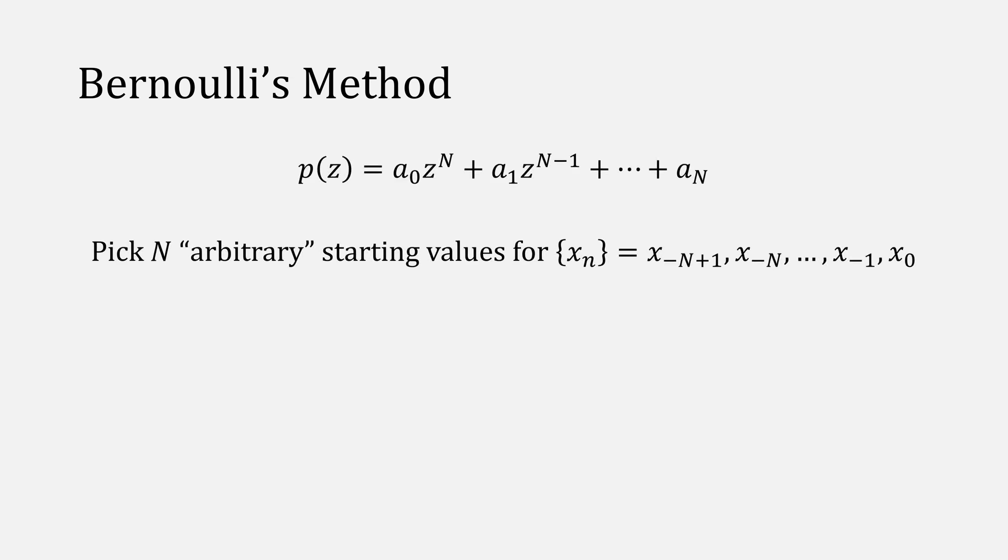Bernoulli's method is as straightforward as it gets. Given a polynomial, you pick n arbitrary starting values. I'll discuss how to pick these values later on in the video, but these are the start of a series of x's. Your next x is given by this equation, which just uses the coefficients of a polynomial.